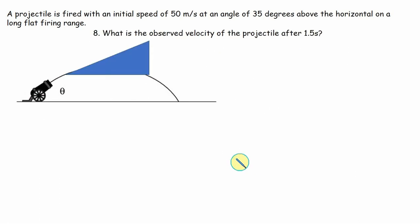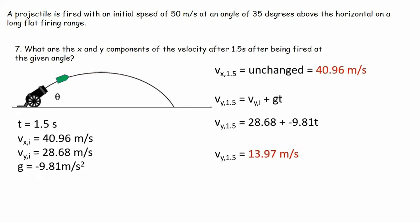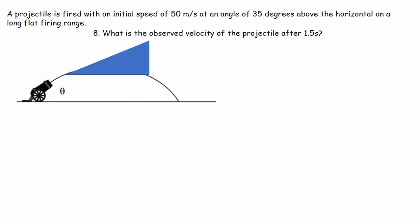Question eight says, what's the observed velocity of the projectile after 1.5 seconds? So if we had some kind of way to measure the overall speed of the projectile, how fast is it going? We know from the previous problem, it's going 40.96 meters per second in the X and 13.97 meters per second in the Y. But what's its overall speed?